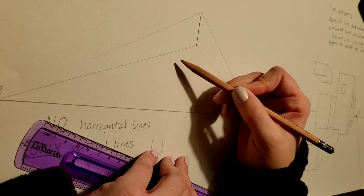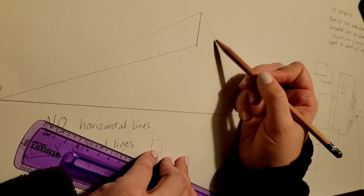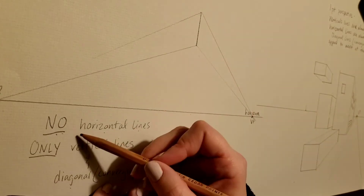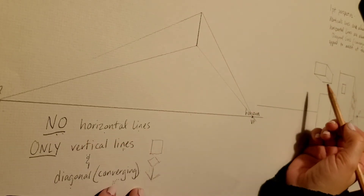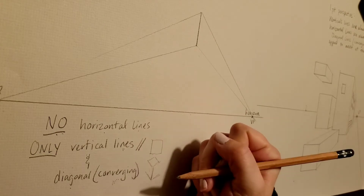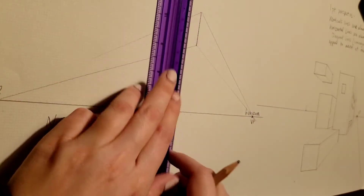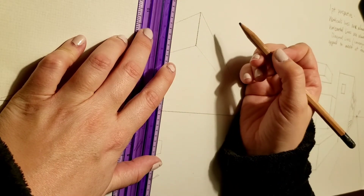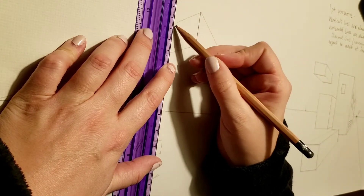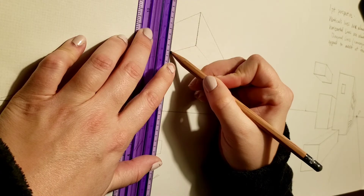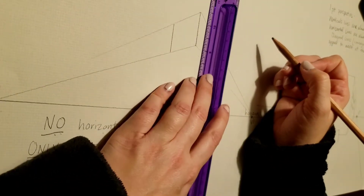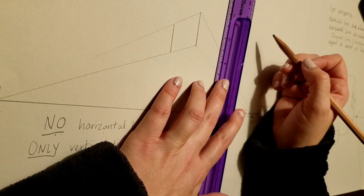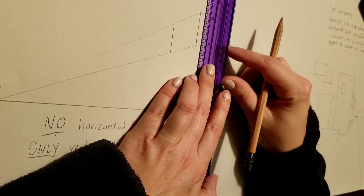Now I'm going to start to construct the back side of that box in order to close it off. Vertical lines are parallel lines, just like in one-point perspective. So I'm going to close it off with a vertical line back here, making sure it's parallel with my original vertical line. And then over here on the right side, I'm going to do the same — make sure it's parallel with my original vertical line.